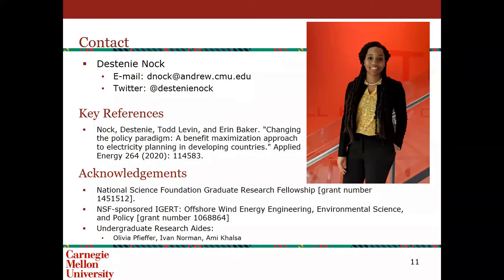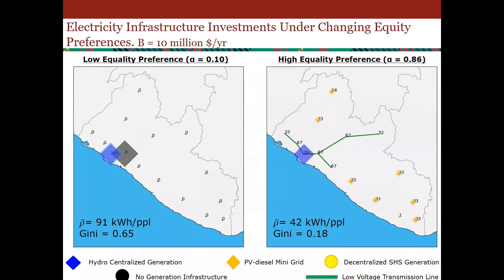A question about the total system cost impact of different equity preferences: since we constrained the budget at $10 million for the annual budget, we're not actually evaluating the cost difference. If you remove the budget constraint, then you'd see a difference in total cost. One thing proposed is to have this run at the back end of a least-cost model — the least-cost model would determine what budget you'd need to invest in reaching your ideal power system, and then our model could tie on to the end to understand how different stakeholder preferences might utilize that budget differently and how that might hinder or help you reach your electrification goals.